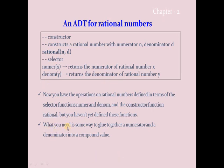We are constructing based on imagination. What you need is some way to glue together the numerator and denominator into a compound value. We are saying `rational` is a constructor function with two parameters, and `numer(x)` and `denom(y)` are selector functions that return the numerator and denominator. But we haven't defined the exact implementation of these two selectors yet.